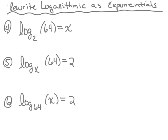Let's take a look at a few more examples. Number four: log base two of sixty four equals x. We're going to rewrite this as an exponential. The first thing we need is the base, which is two. The exponent is x, and it equals the argument, which is sixty four. Therefore we end up with the exponential two to the x power equals sixty four.